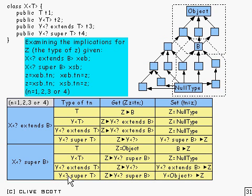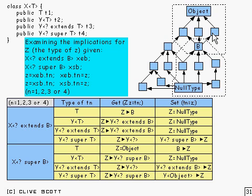What about Y of something which is super T, where T lies in this upper box? Super B would cover a whole lot. For any possible choice of T, Y of super T is going to include Y of object. So it's just that set by itself — the intersection is just Y of object. So Z is going to have to be Y of object or a subtype of Y of object. Note that Y itself could have a supertype or subtype, so you have to allow that possibility.